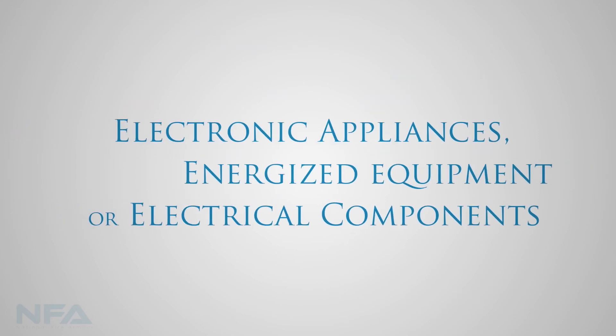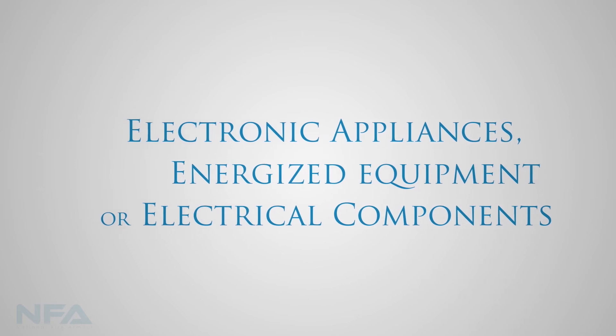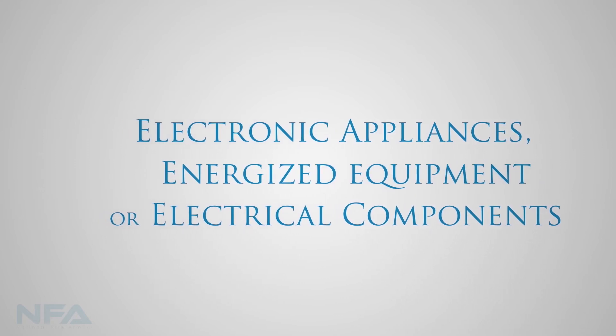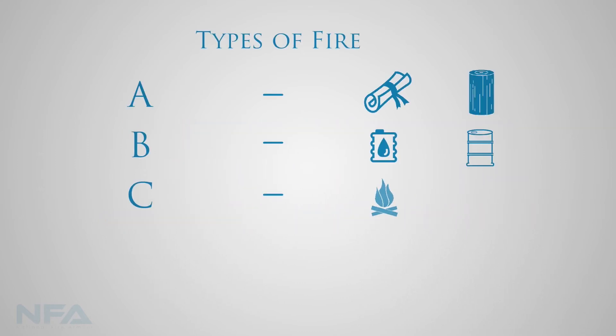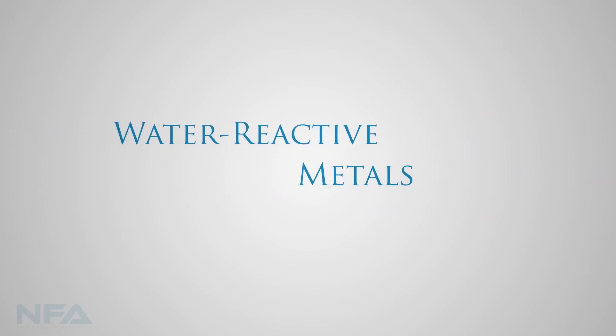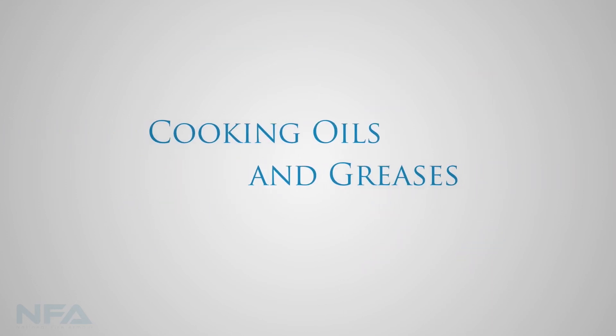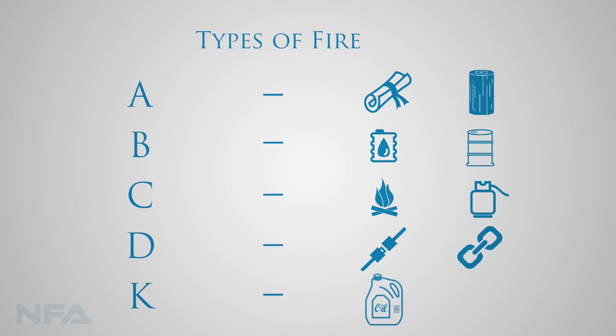Class C type fire is caused by electronic appliances, energized equipment or electrical components, and also by LPG or any other flammable gas. Class D is used for water-reactive metals such as burning magnesium. A Class K type involves cooking oils and greases like vegetable fats.